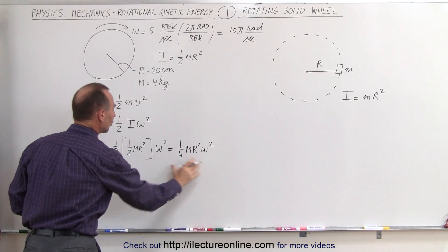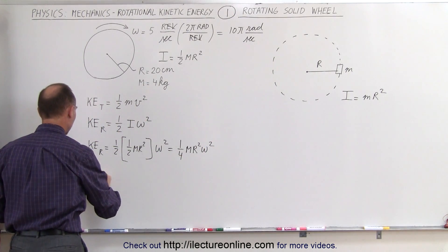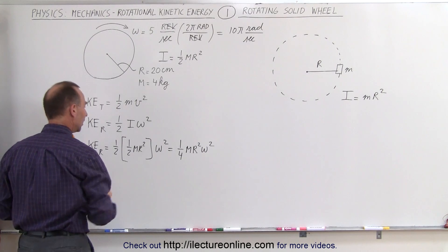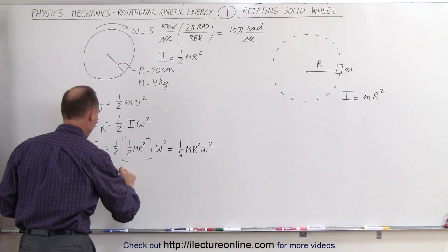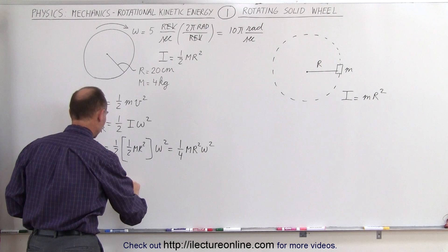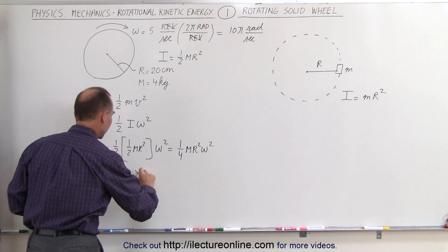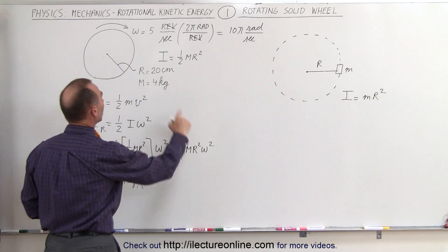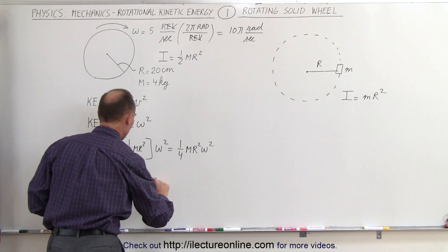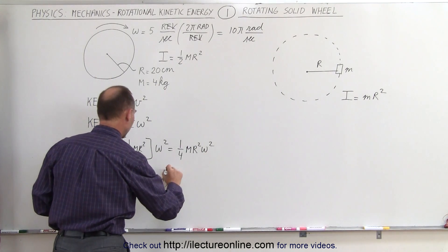Now we can plug in all the numbers that we have. Therefore, the rotational kinetic energy is equal to ¼ times the mass, the mass would be 4 kilograms, times the radius squared. The radius is 0.20 meters and we have to square that.